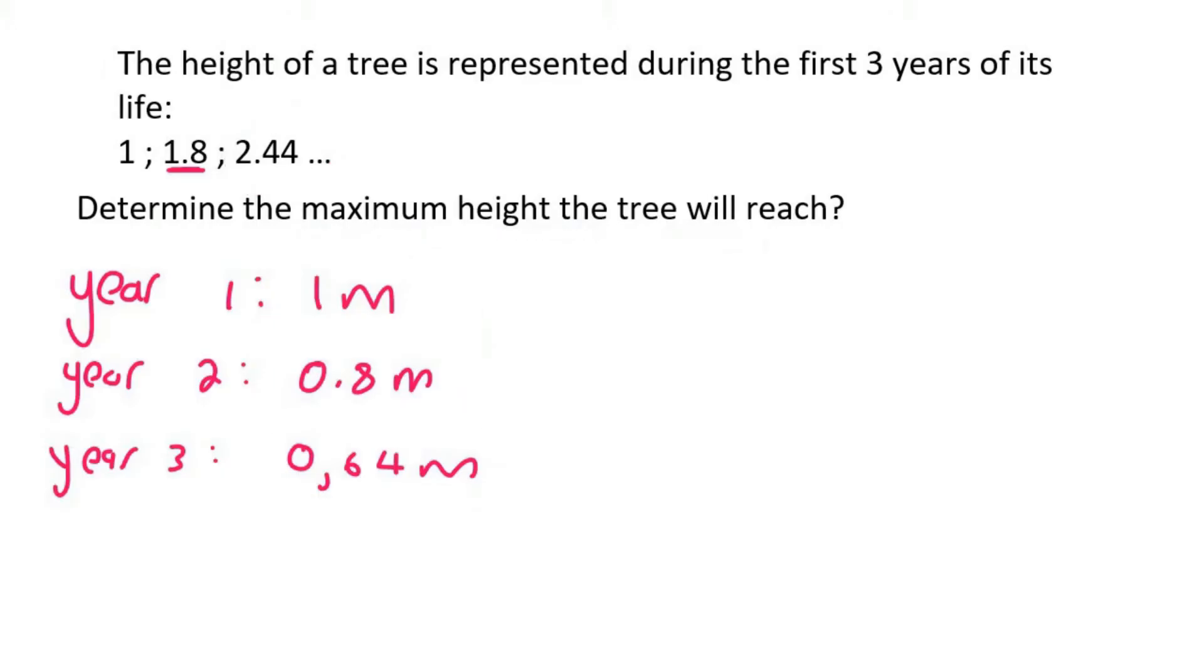Now these are the numbers. These ones that we've just found over here, they form a nice ratio. Let's see. What is T2 over T1? Well, that's 0.8 over 1, which is 0.8. T3 over T2 is 0.64 over 0.8, which is 0.8.